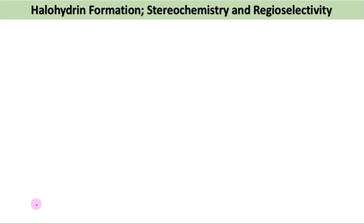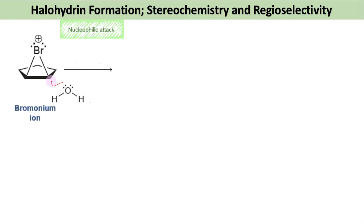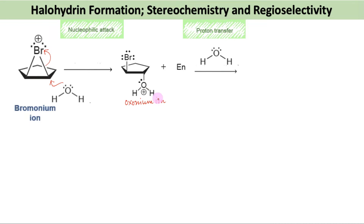When bromination occurs in a non-nucleophilic solvent such as CHCl3, the result is the addition of Br2 across the pi bond, as seen in the lecture on halogenation of alkenes. However, when the reaction is performed in the presence of water, the high-energy bromonium ion intermediate that is initially formed will be captured by a water molecule before having a chance to react with a bromide ion, to form the oxonium ion — called so because oxygen is bearing a positive charge — although some dibromide product is likely to be formed as well.